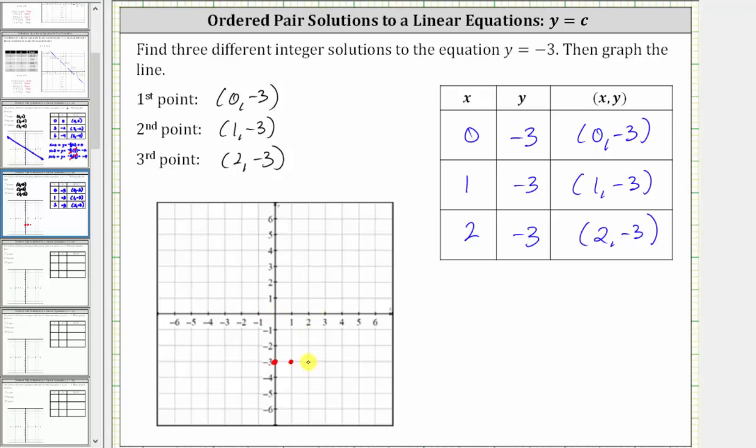And now we sketch a line passing through the three points. Notice how the line is a horizontal line.